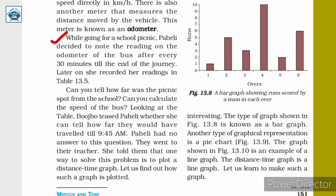While going for a school picnic, Paheli decided to note the reading on the odometer of the bus after every 30 minutes till the end of the journey. She recorded her readings in table 13.5. Can you tell how far the picnic spot was from the school? Can you calculate the speed of the bus? Looking at the table, Bhujo asked Paheli whether she could tell how far they would have travelled by 9:45 a.m. Paheli had no answer, so they went to their teacher, who told them that one way to solve this problem is to plot a distance-time graph.